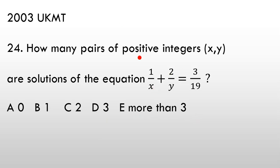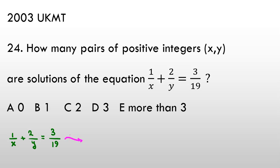So here, because we are working with positive integers, it's good to multiply by the denominators to get rid of them. If we multiply both sides by 19xy, then we get 19y + 38x = 3xy.